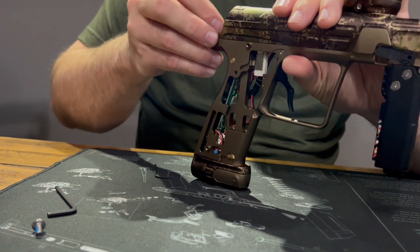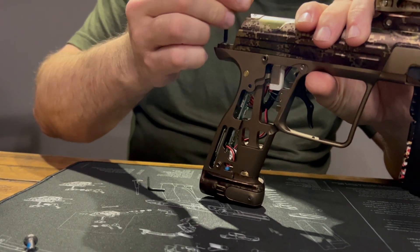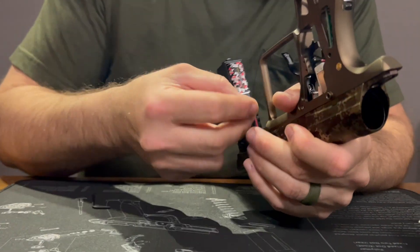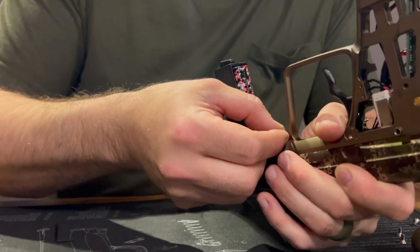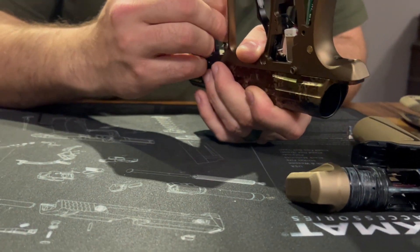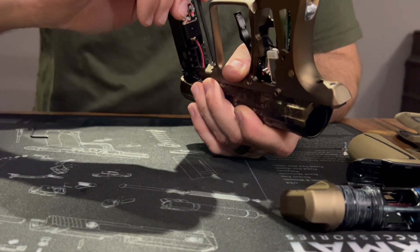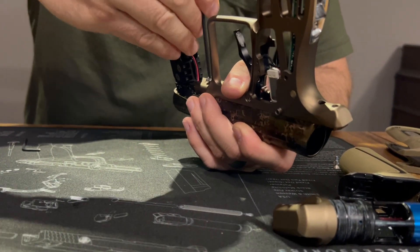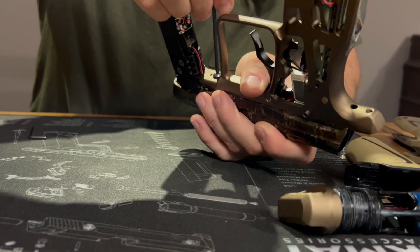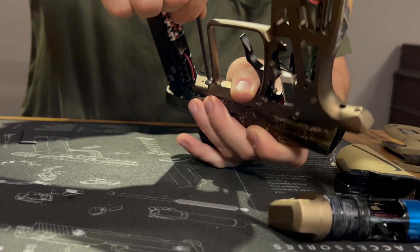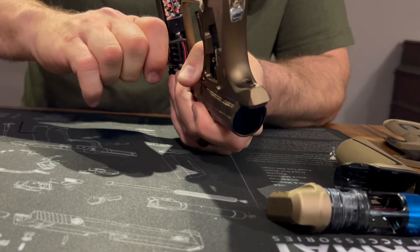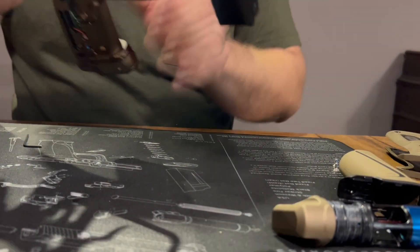Then put your screws back in. Again, you just want to leave these loose. Get them both in, get them both started before you tighten them completely down. Once they're in, then you can snug them up.